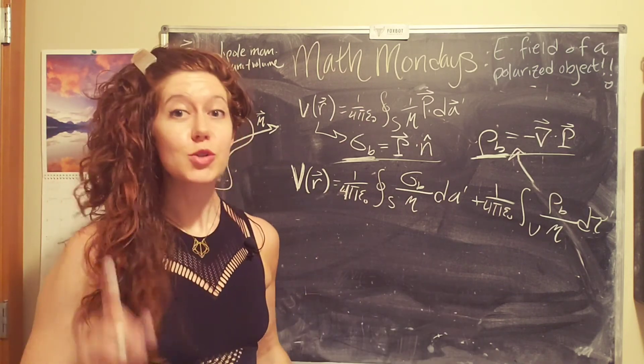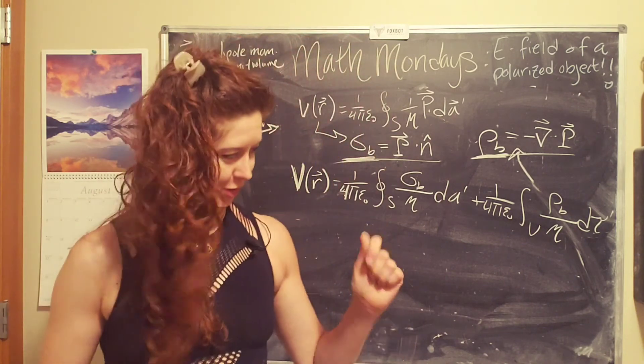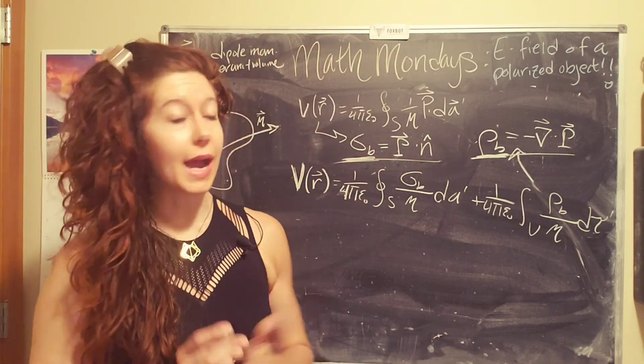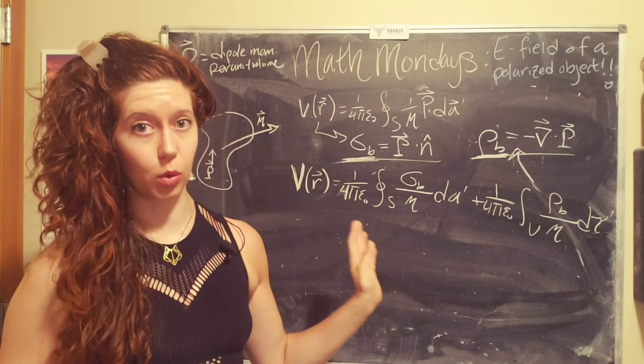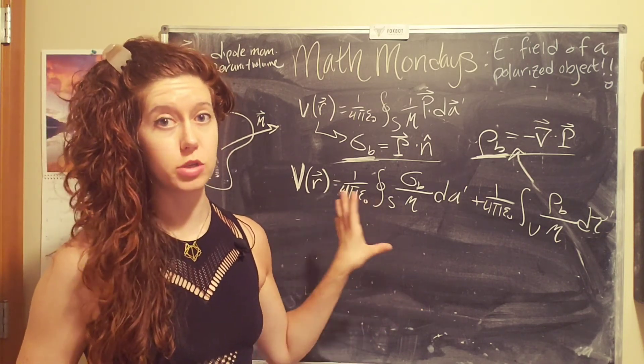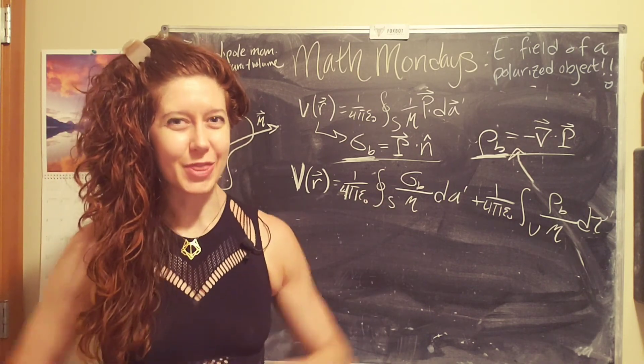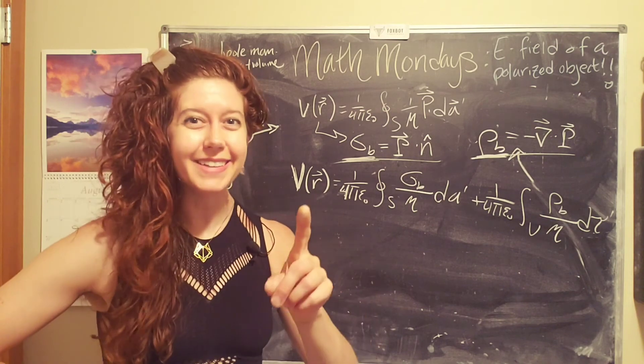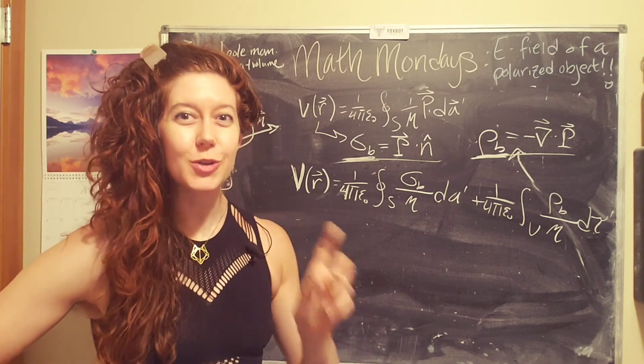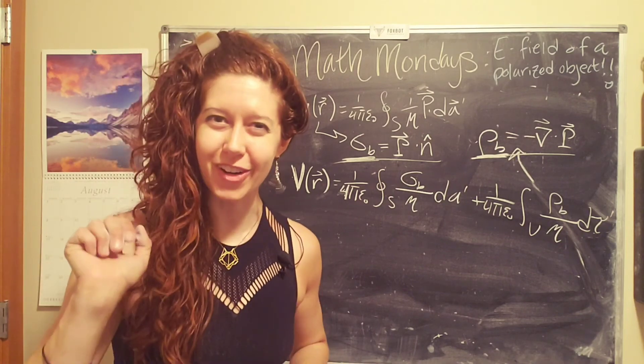So in the next episode, part two, we are going to look at a specific example of how you calculate the electric field due to bound charges in a polarized object. So thank you for watching part one and check out part two to see how you actually use these. We'll see you in part two. Bye.